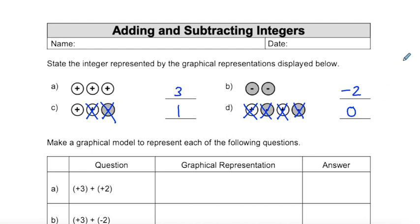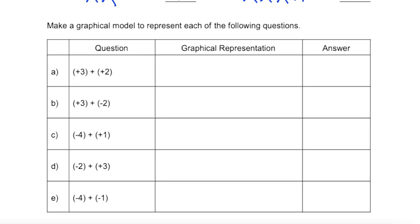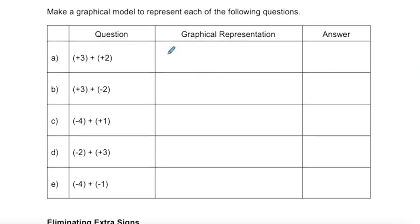We can use the concept of integer markers — the visual representations of integers — to help us come up with the solution to adding or subtracting negative integers. We're going to start by drawing the graphical representation. So plus three is three positive markers, plus two is two positive markers.